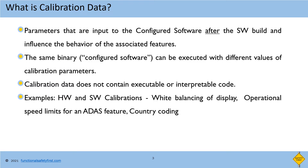Calibration data refers to parameters that are input to the configured software after the software build. These parameters are typically stored in non-volatile memory such as an EEPROM or data flash, and are programmed to a specific value at end of line during manufacturing or by the OEM themselves. This is not something new and has existed in automotive software for decades. The final binary contains behaviors for different calibration data, and depending upon the values programmed, the corresponding behavior is executed.